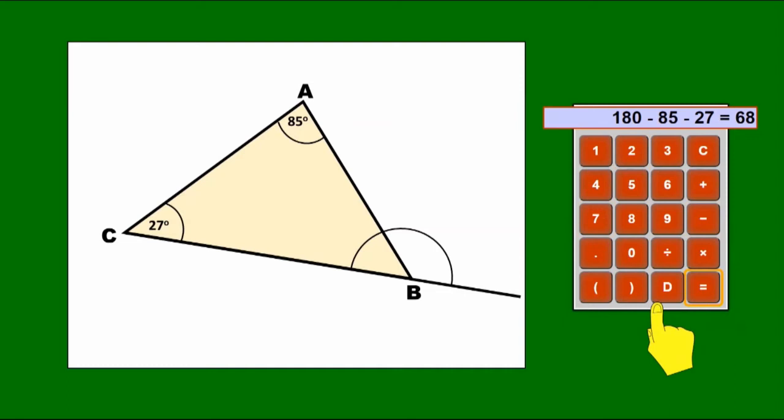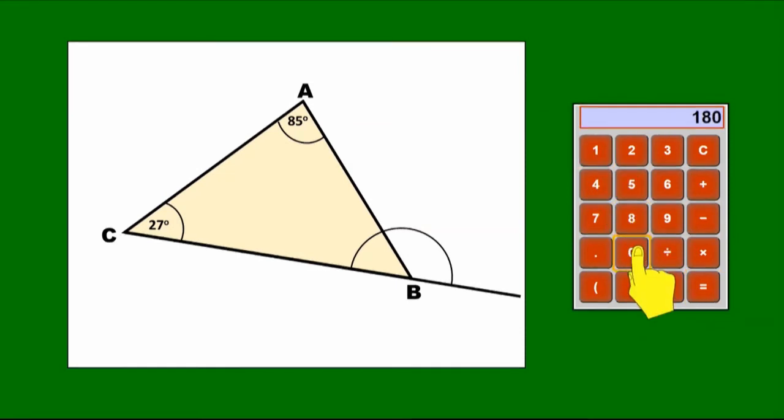Now because the interior and the exterior angles are on a straight line, if I subtract 68 from 180, what's left will be that exterior angle. 180 minus 68 gives us 112. So the exterior angle is 112.